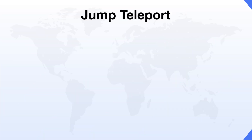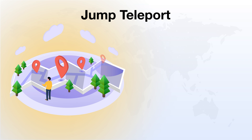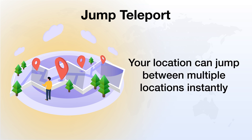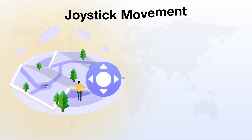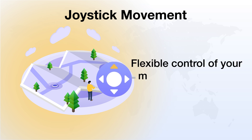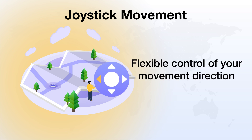Three: jump teleport movement. Set multiple jump points to instantly jump between multiple locations for your positioning. Finally, try the joystick movement feature, which allows you to flexibly control the direction of your movement with the GPS joystick.